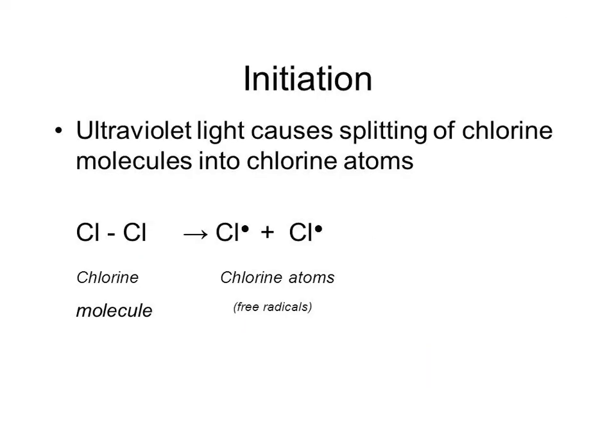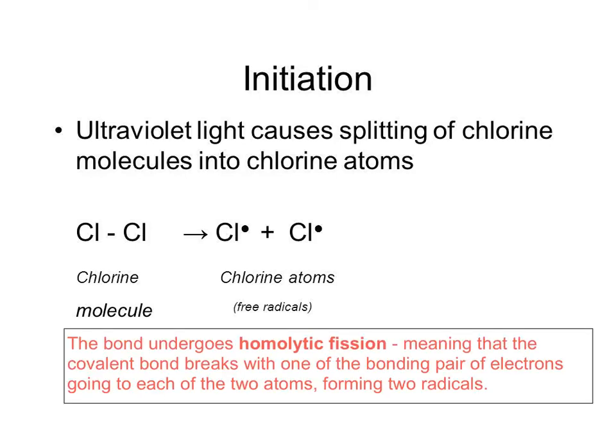So let's look at the starting point of the mechanism using chlorine as an example. What happens is ultraviolet light causes splitting of the chlorine molecules into chlorine atoms. And this process happens through something called homolytic fission, which means that the covalent bond breaks with one of the bonding pair of electrons going to each of the two atoms. So basically, each atom gets one electron from the bond.